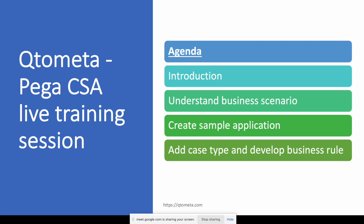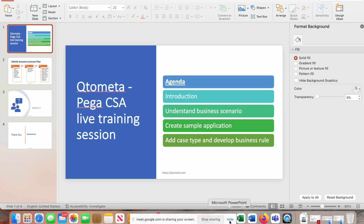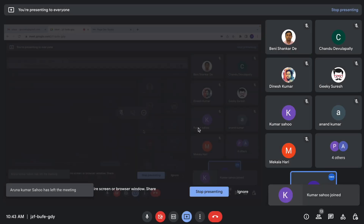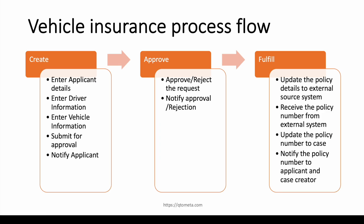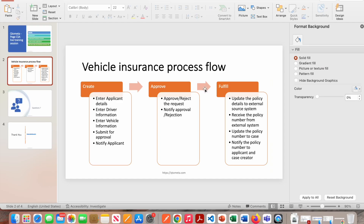Let's first understand the business scenario we're going to cover. I'm going to develop a live application — this is the vehicle/auto insurance process flow. In this, if you see anywhere in the world when you go for vehicle or auto insurance, there are mainly three stages. First, you call the insurance company and say you want insurance. They say fine, give me some details and I'll create a profile for you. Then it goes for approval, and finally you pay and get your insurance.